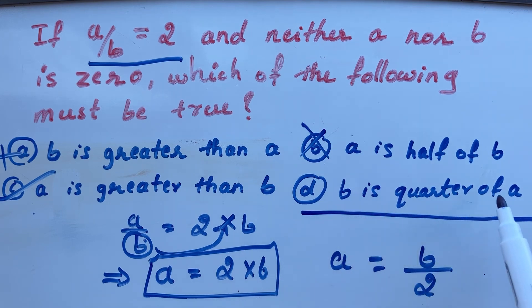What is fourth option? B is quarter of A. So which is also wrong. B is not quarter of A. So only correct option is A is greater than B.